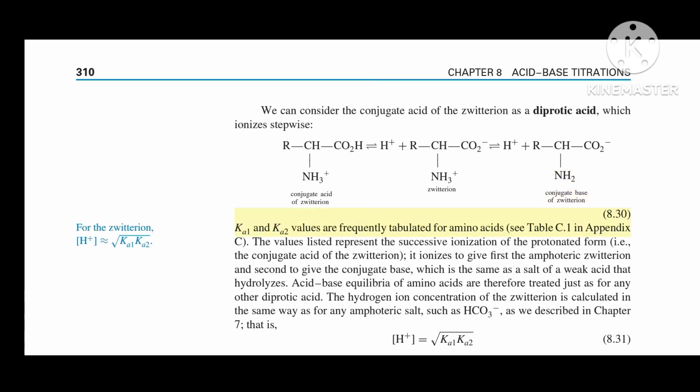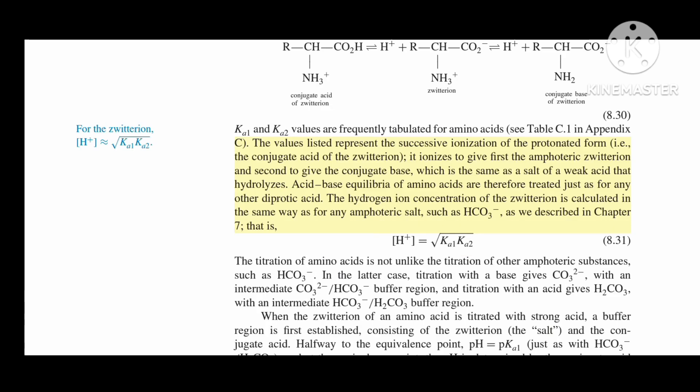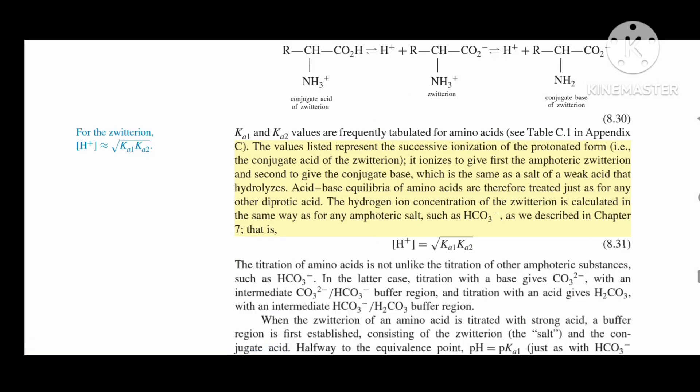Ka1 and Ka2 values are frequently tabulated for amino acids (see Table C.1 in Appendix C). The values represent the successive ionization of the protonated form—the conjugate acid of the zwitterion. It ionizes to give first the amphoteric zwitterion and second the conjugate base, which is the same as a salt of a weak acid that hydrolyzes. Acid-base equilibria of amino acids are therefore treated just as for any other diprotic acid.